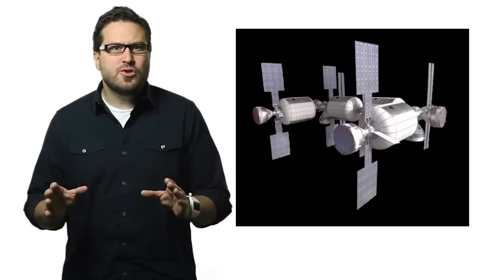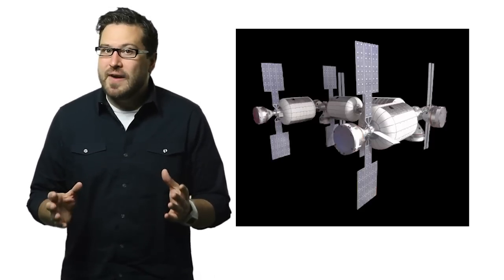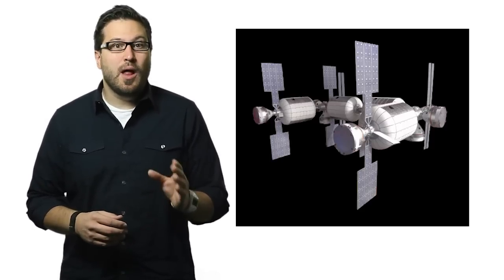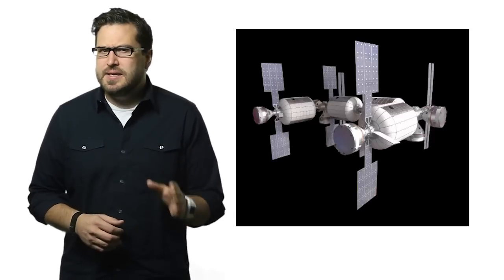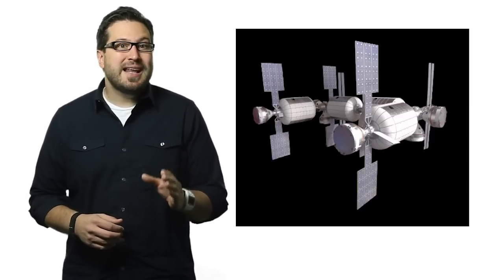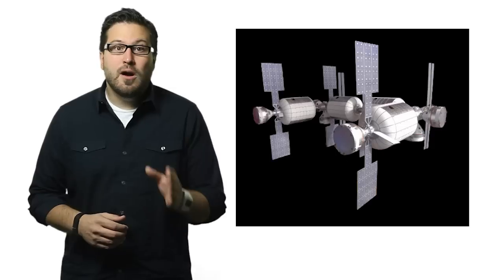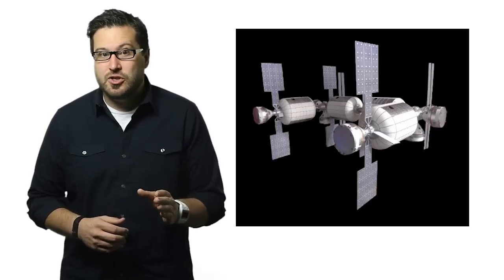Parametric modeling introduced the concept that if you modify one dimension of a feature, any related features will update immediately. This is especially useful when you're designing complex models or are looking to make multiple configurations of a part.